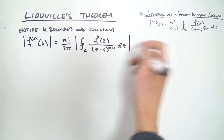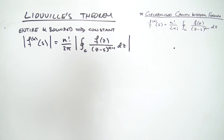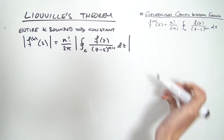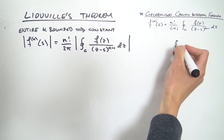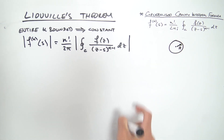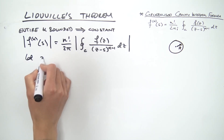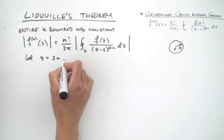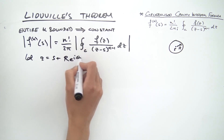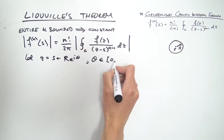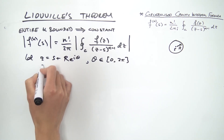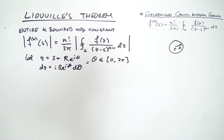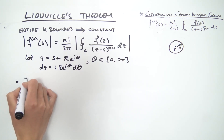Now we introduce a parametrization. We have the point s in the complex plane, and the curve C could be anything, but we'll take it to be a circle of radius r. We parametrize by letting z = s + r·e^(iθ), where θ ranges from 0 to 2π. Differentiating gives dz = i·r·e^(iθ) dθ.